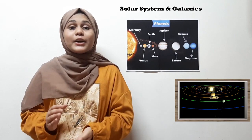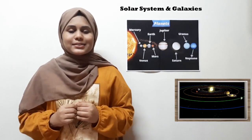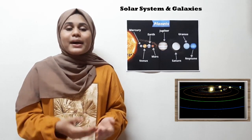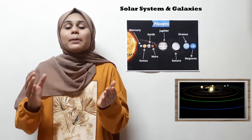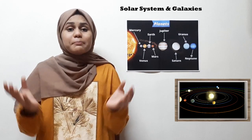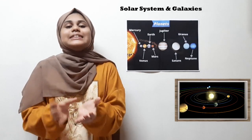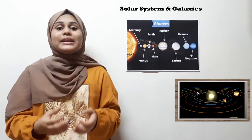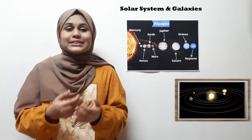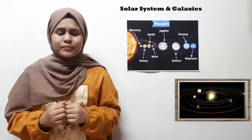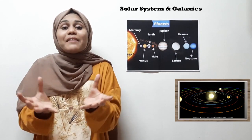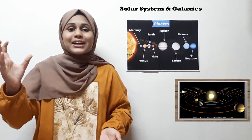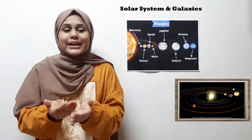We humans are a part of the Earth, the Earth is a part of the solar system, and the solar system is a part of a galaxy, and many galaxies together form the universe. The Earth that we live in is in a solar system. A solar system is a gravitationally bound system of the Sun and the objects that orbit around it directly or indirectly.